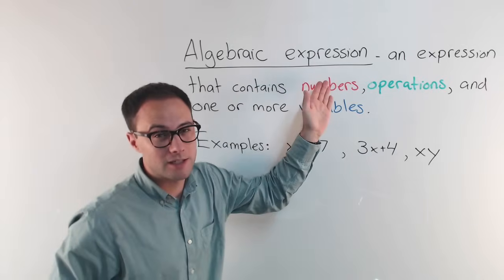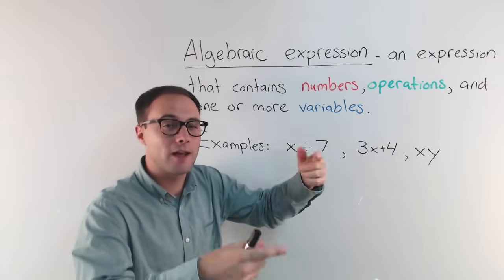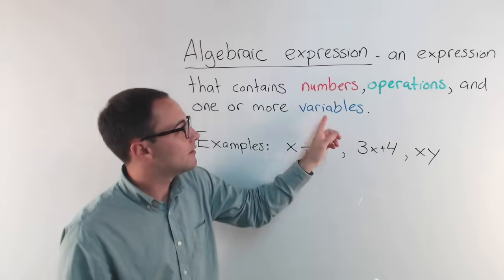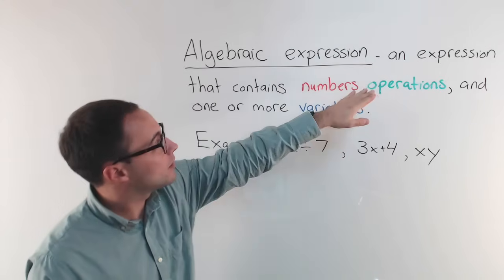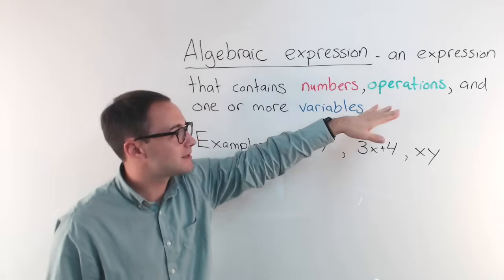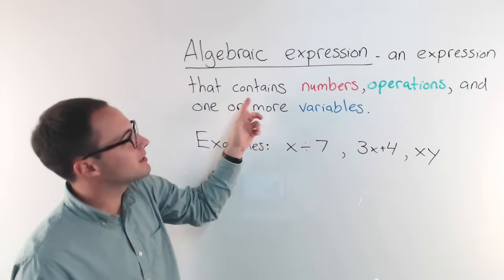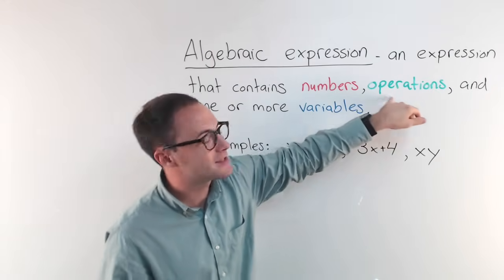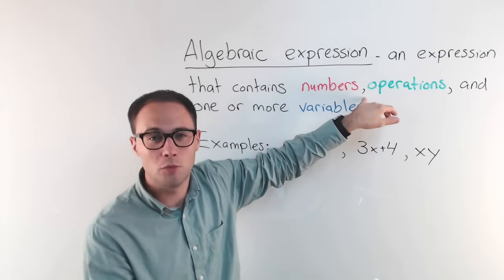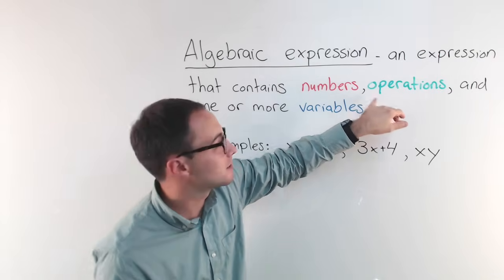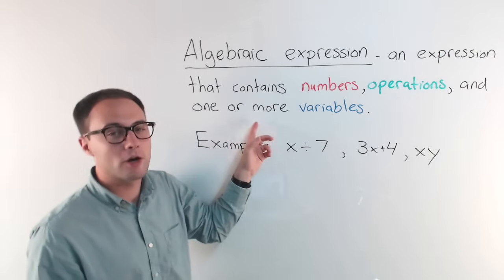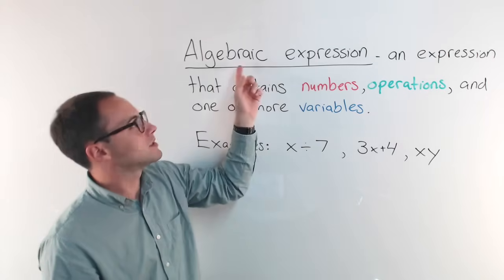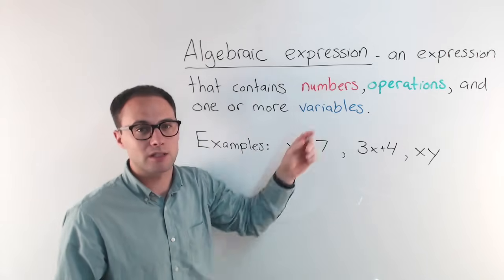An algebraic expression is different than a numerical one because it includes variables. So the definition — and you should write this down — an expression that contains numbers and operations. If it just has those, then it's just a numerical expression. But if it also has one or more variables, then we're talking about an algebraic expression.